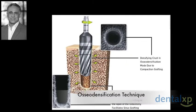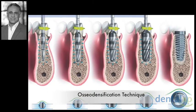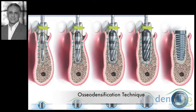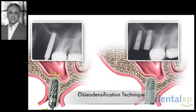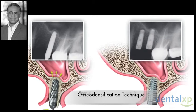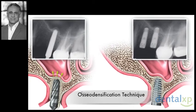First, we'll use osteodensification. It's a relatively new concept that, in my opinion, is one of the most exciting advances in implant site development. The technique involves the use of specially designed burrs that can be used for both osteotomy as well as osteodensification when used in reverse mode. It increases bone density at the osteotomy site, expands the alveolar ridge where it may be thin, and it can also be used to increase the height of bone in the posterior maxilla by its sinus lift application.